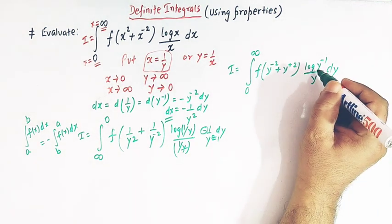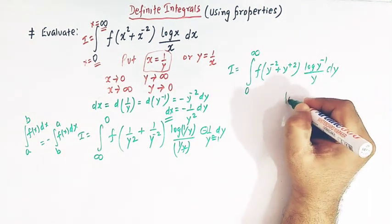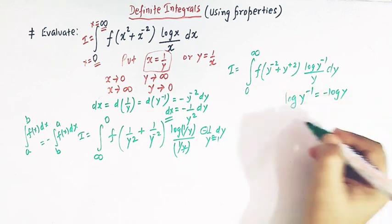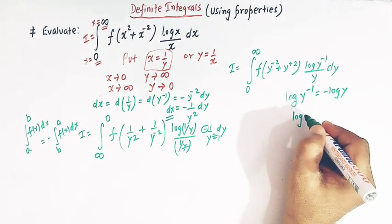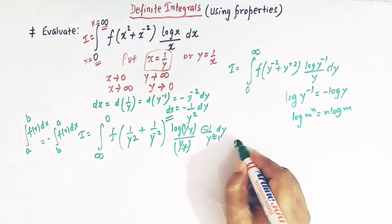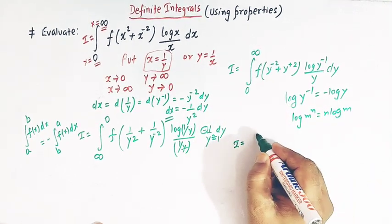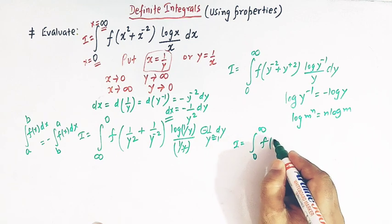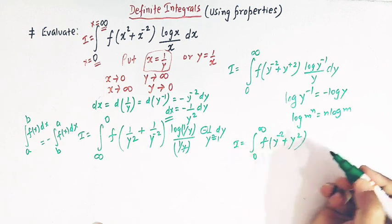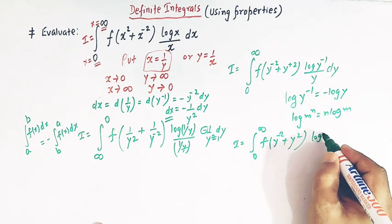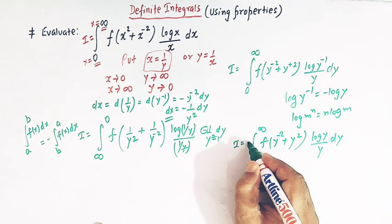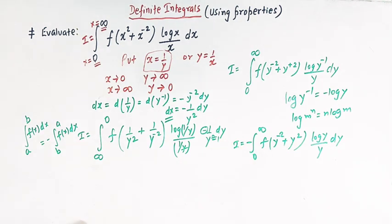Using the property of logarithms, log of y raised to minus 1 is equal to minus log y, because log m raised to n equals n log m. So we can now write this integral I as the integral from 0 to infinity of f of y squared plus y raised to minus 2, times log y over y, dy, and the negative sign is taken outside the integral.